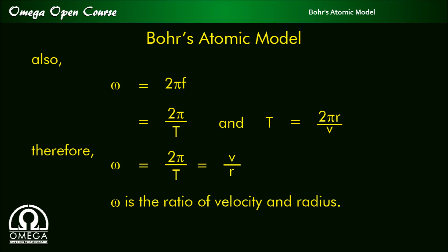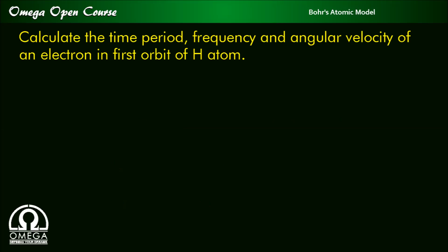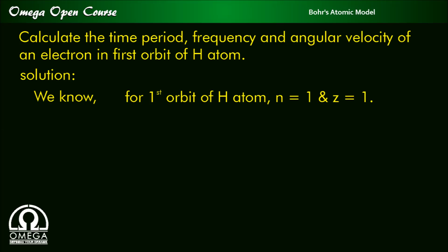Now let us do a numerical based on the idea of time period, frequency and angular velocity. Calculate the time period, frequency and angular velocity of an electron in the first orbit of a hydrogen atom. For the first orbit of H atom, n is equal to 1 and z is equal to 1.